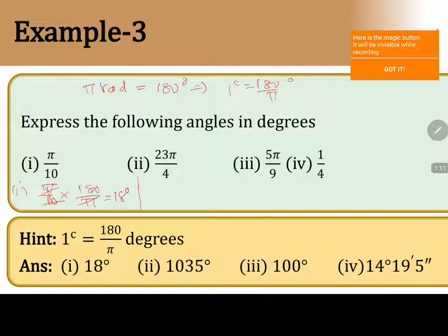here also, 23 pi by 4 multiplied by 180 by pi. Pi cancels. 4 goes 45 times. So when you simplify, the angle will be 1035 degrees.